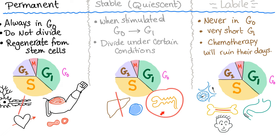Labile cells are dividing all the time. Spermatogonia divide like crazy. Hair follicle cells divide constantly — that's why you need to shave. Bone marrow dishes out millions of red blood cells every single day. Your gut epithelium is constantly regenerating, which is why cancer of the small intestine is rare — any cancerous cell would be shed in the stool in less than 24 hours due to rapid regeneration and shedding.